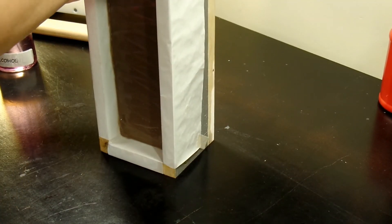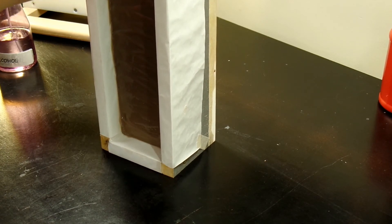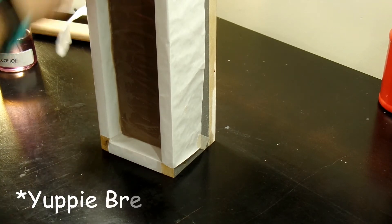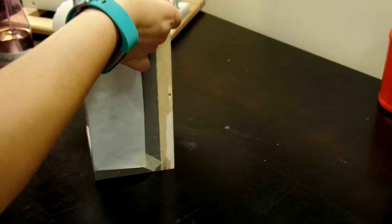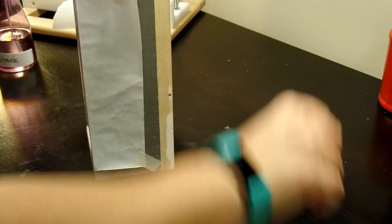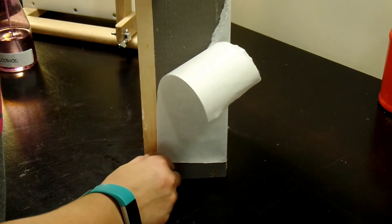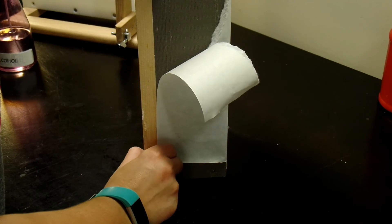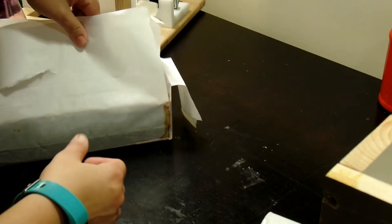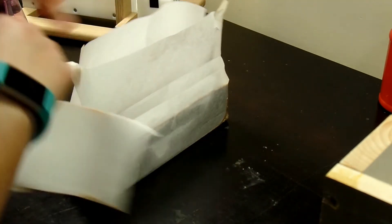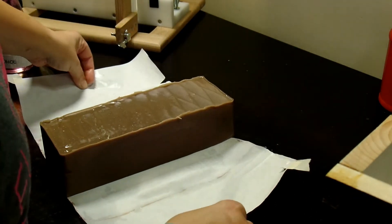I'm just going to unmold our Guinness beer soap. I don't have a name for this one yet, but you will have already seen the name on the title of the video. This one had a little bit of ash on it, so I did spray it with alcohol. This was very fluid when I put it in the mold. It looks amazing.